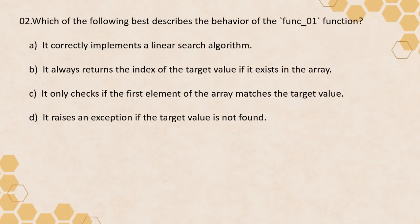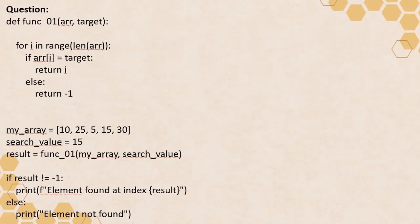The next question is: which of the following best describes the behavior of function_01? We are not asking if it is correct or incorrect — we want to understand the behavior of the function. If you understand the flow, you can identify the correct answer: whether it correctly implements a linear search, always returns an index or target value if it exists, only checks the first element for a match, or raises an exception if the target is not found.